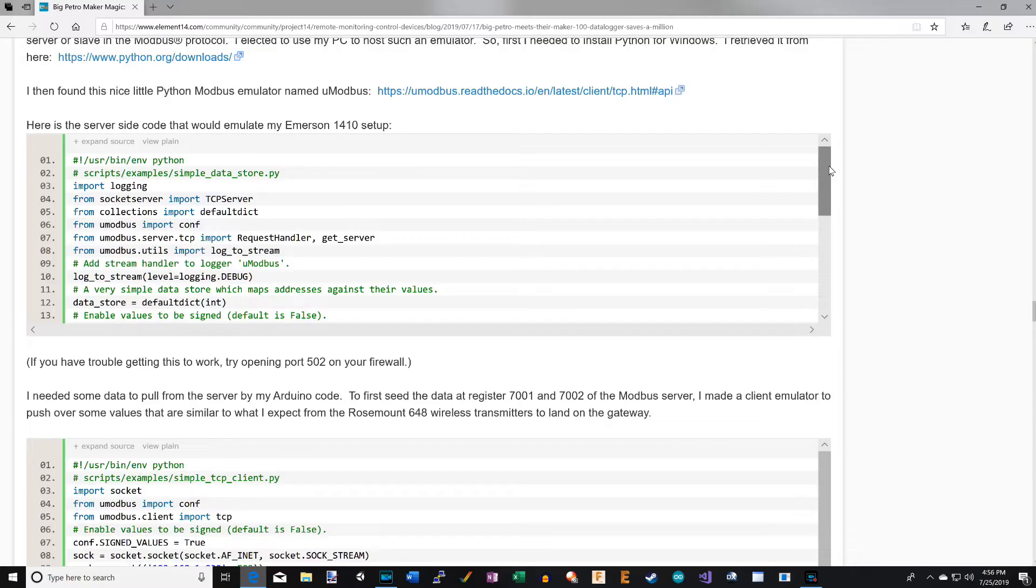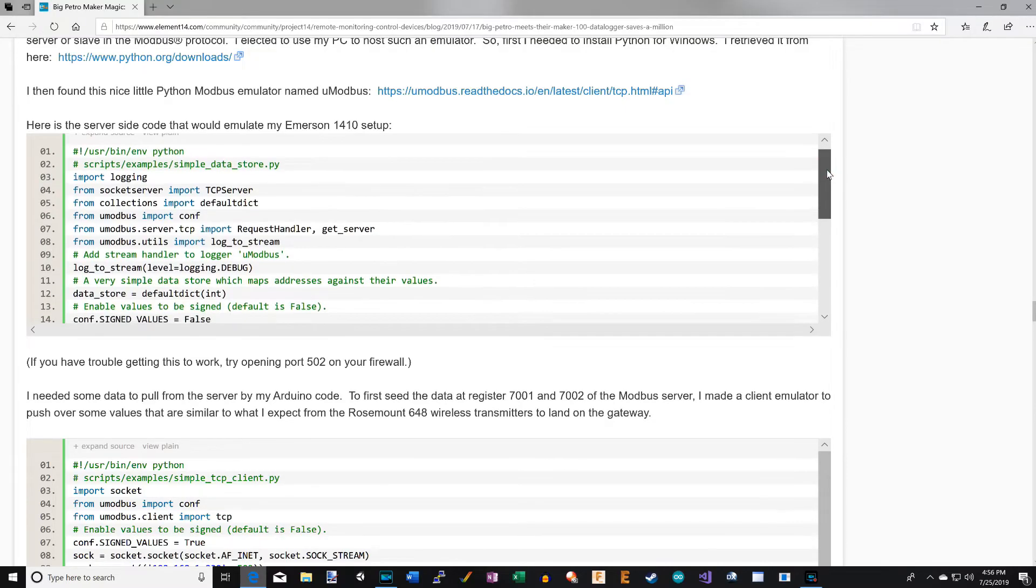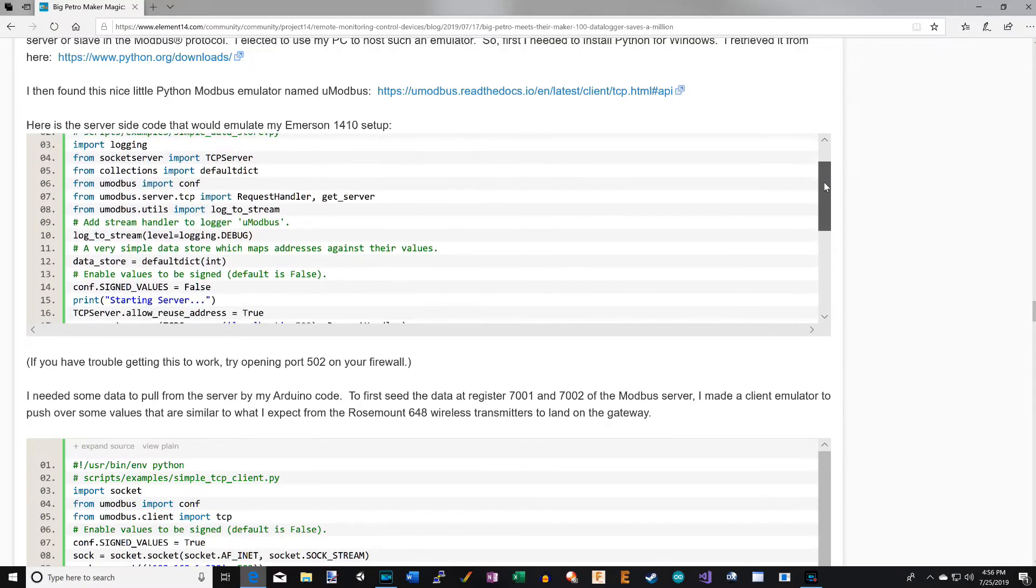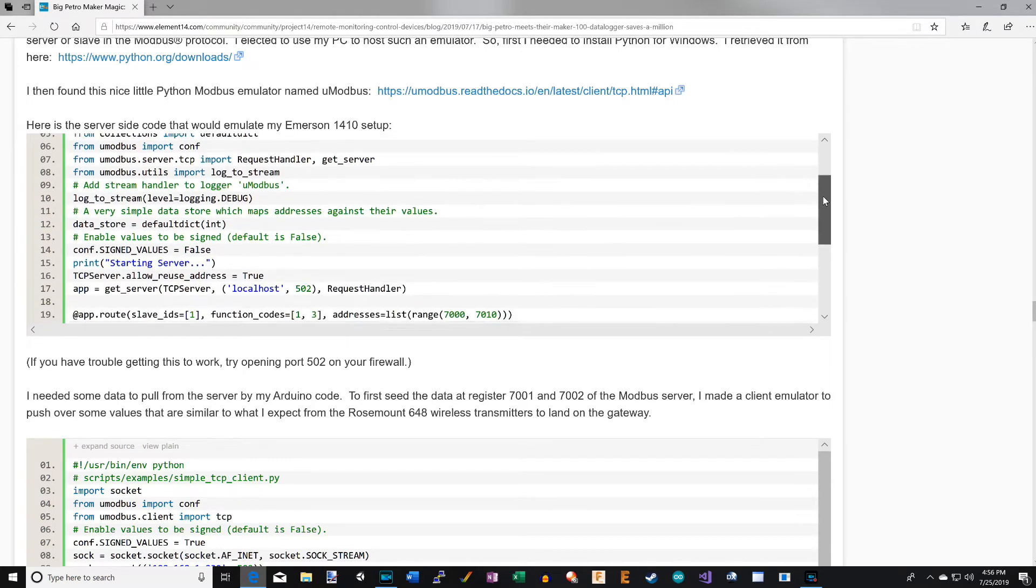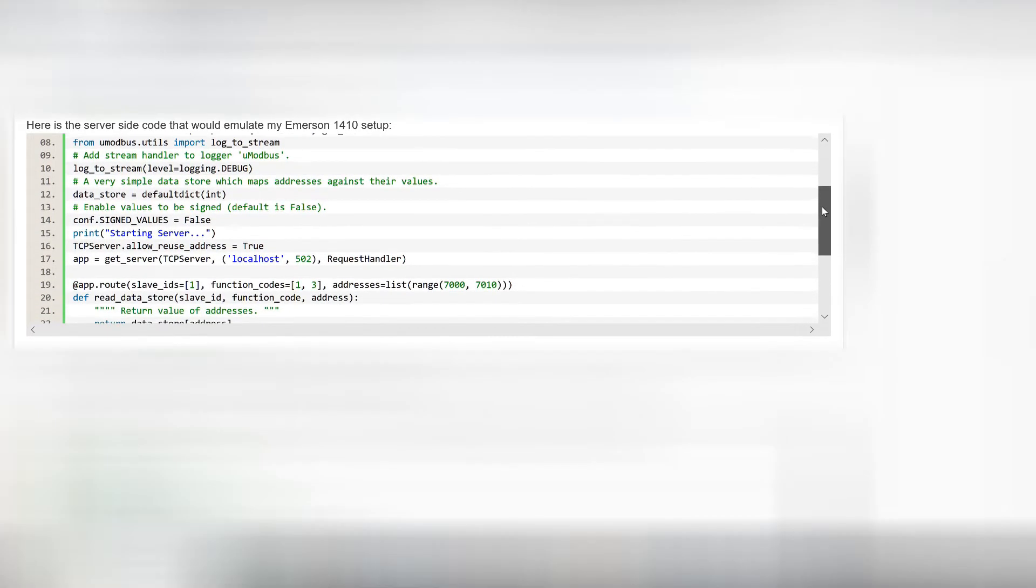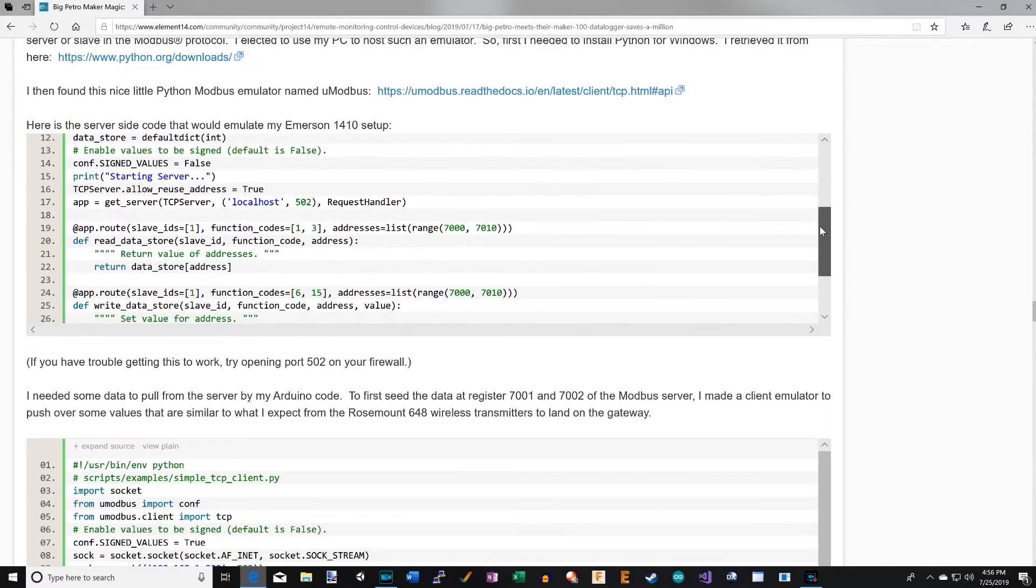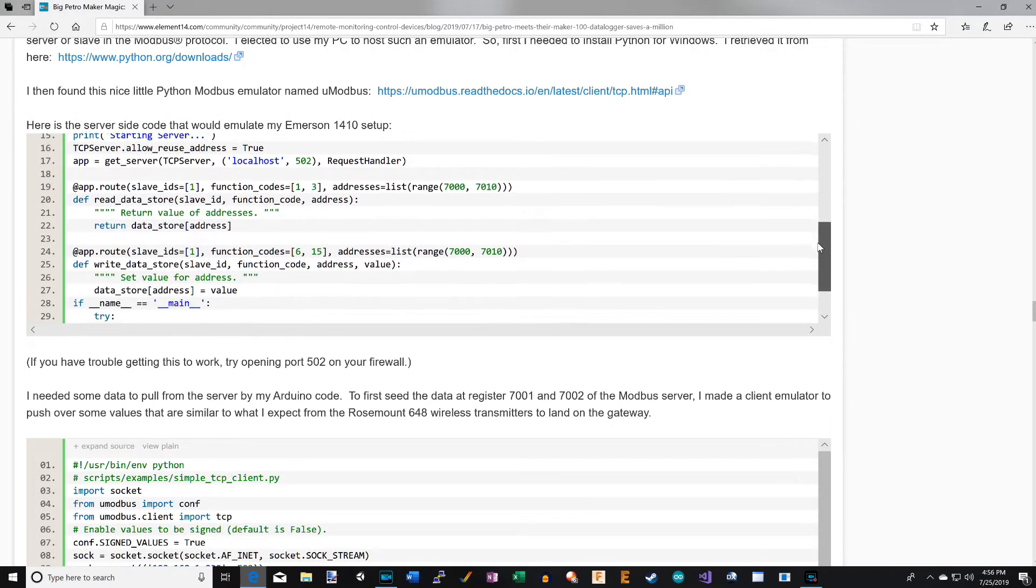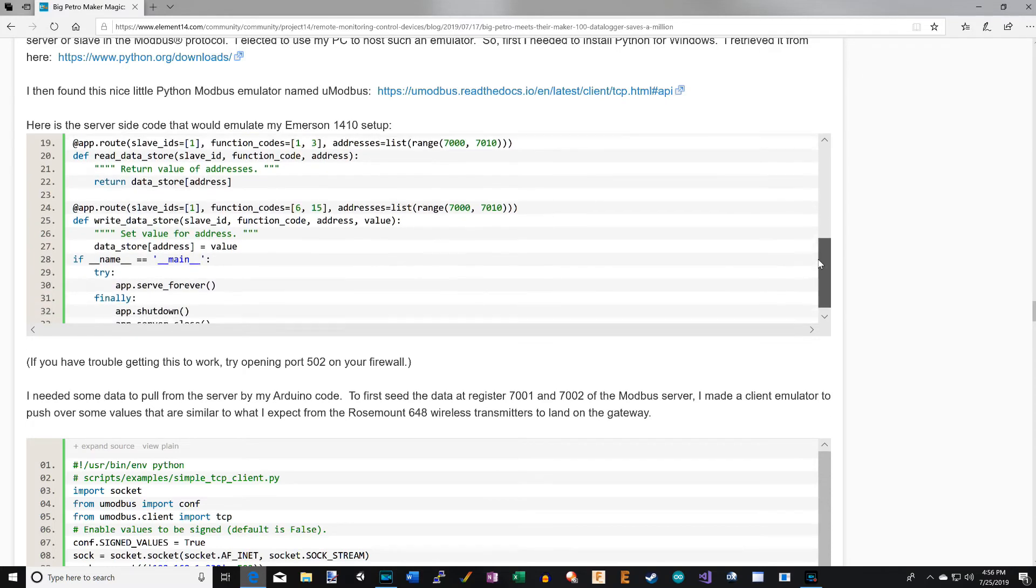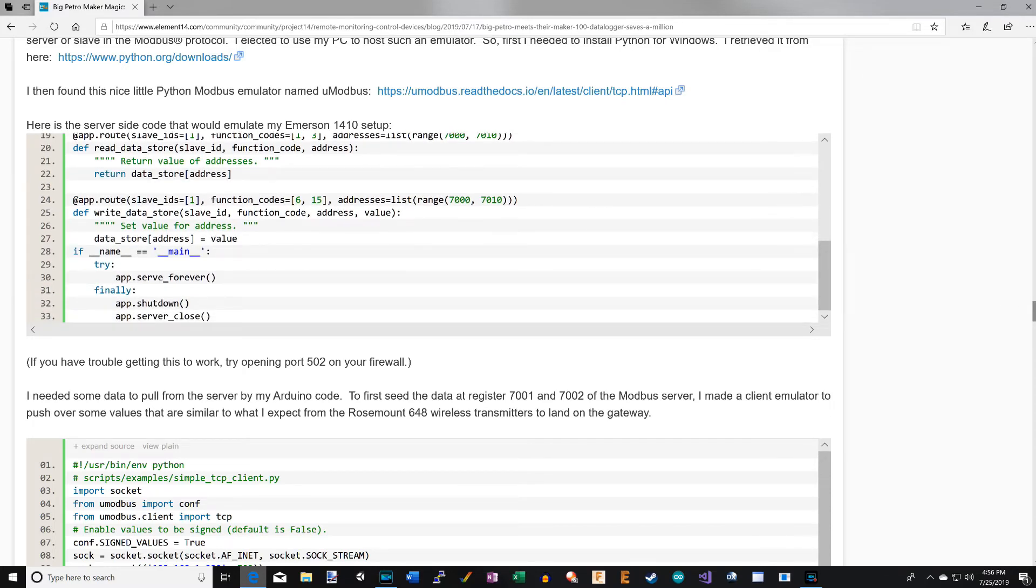Moving right along, so we can talk to the Rosemount wireless transmitters, we need to be able to speak the protocol called Modbus. To do that, I'm first going to make an emulator on a PC that will simulate the Rosemount transmitters, and then the Arduino will hit that to read its data.